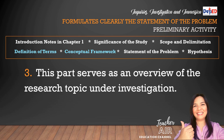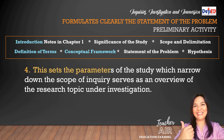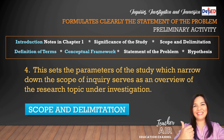Number three: this part serves as an overview of the research topic under investigation. The answer is introduction — it's the first part of the research paper. Number four: this sets the parameters of the study which narrow down the scope of inquiry. The answer is scope and delimitation.